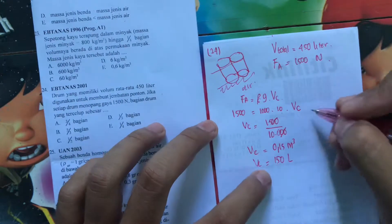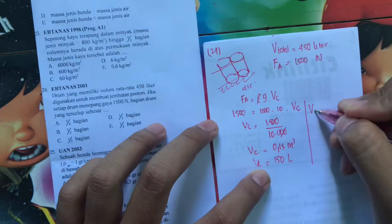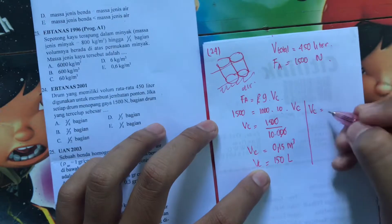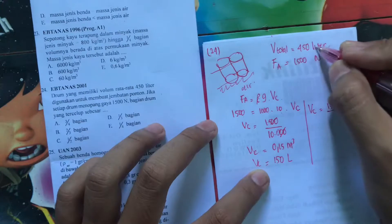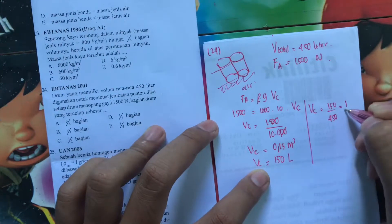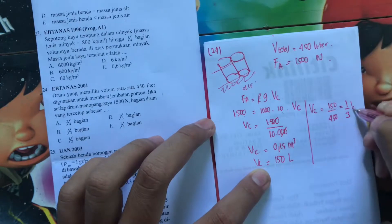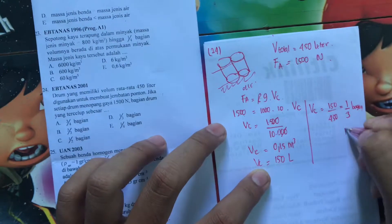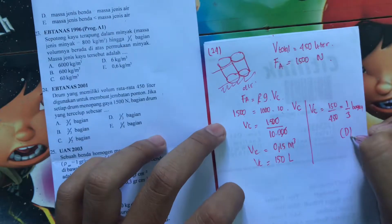Berarti volume tercelupnya itu adalah fraksinya berapa kalau fraksinya? Berarti 150 dibagi volume total ini 450. Jadinya adalah 1 per 3 bagian. Berarti jawabannya adalah yang D. Seperti itu.